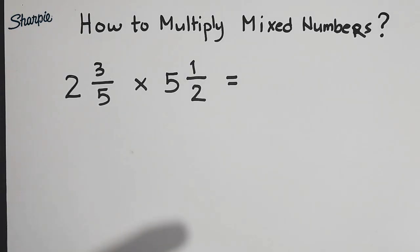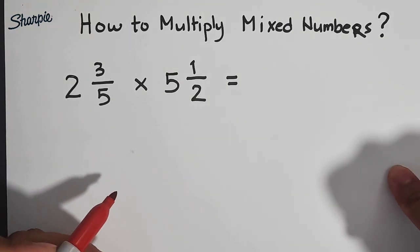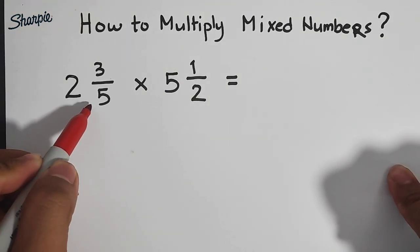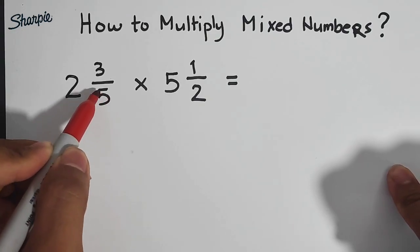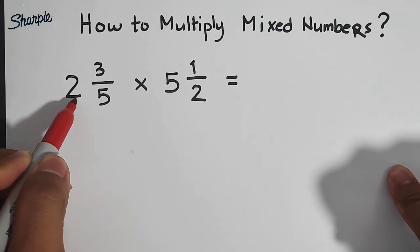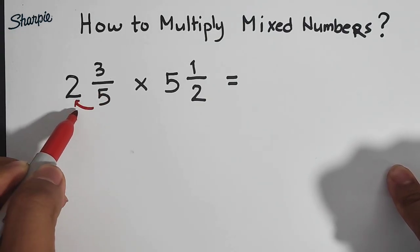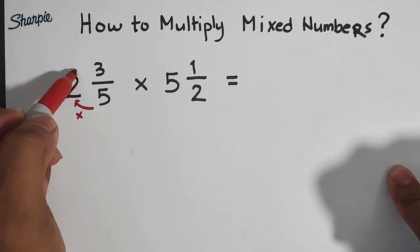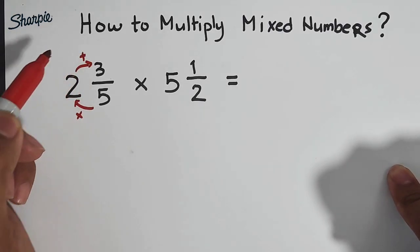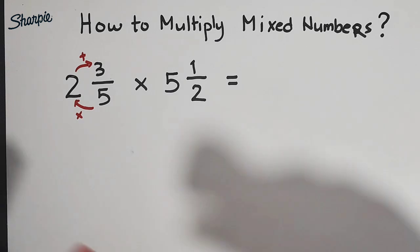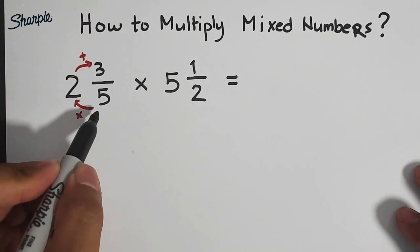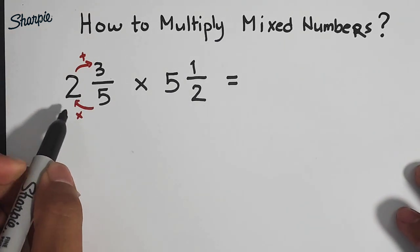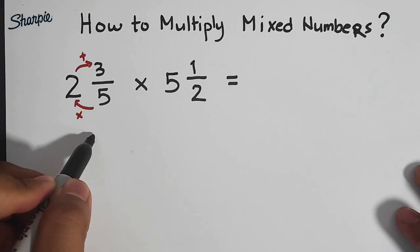So let's start with the conversion. First, we need to multiply the denominator to the whole number. So 5 times 2, that is 10. And then we will add the numerator, which is 3. So our new fraction, the improper fraction, is 5 times 2, which is 10, plus 3. That is 13.